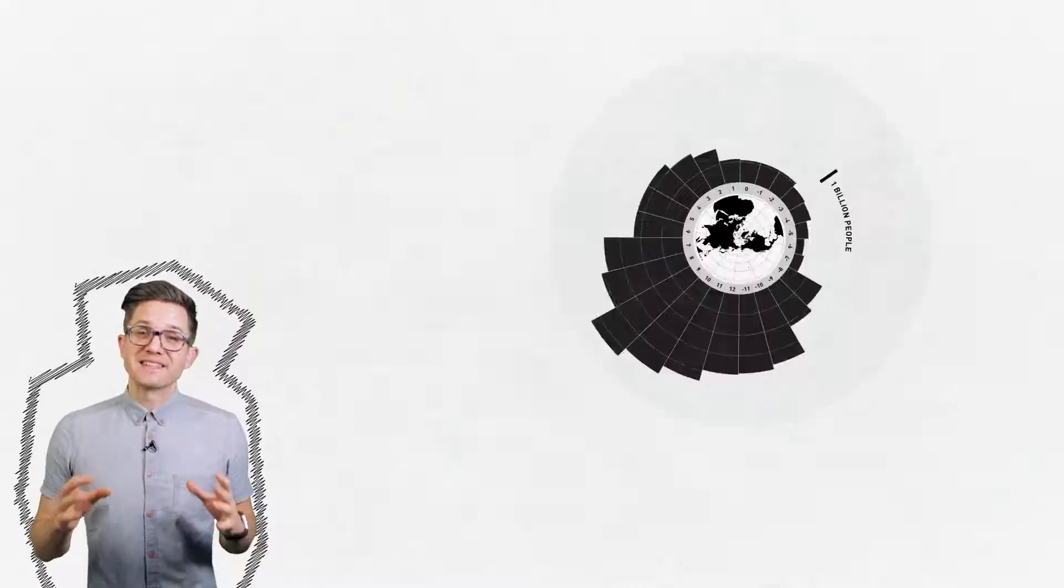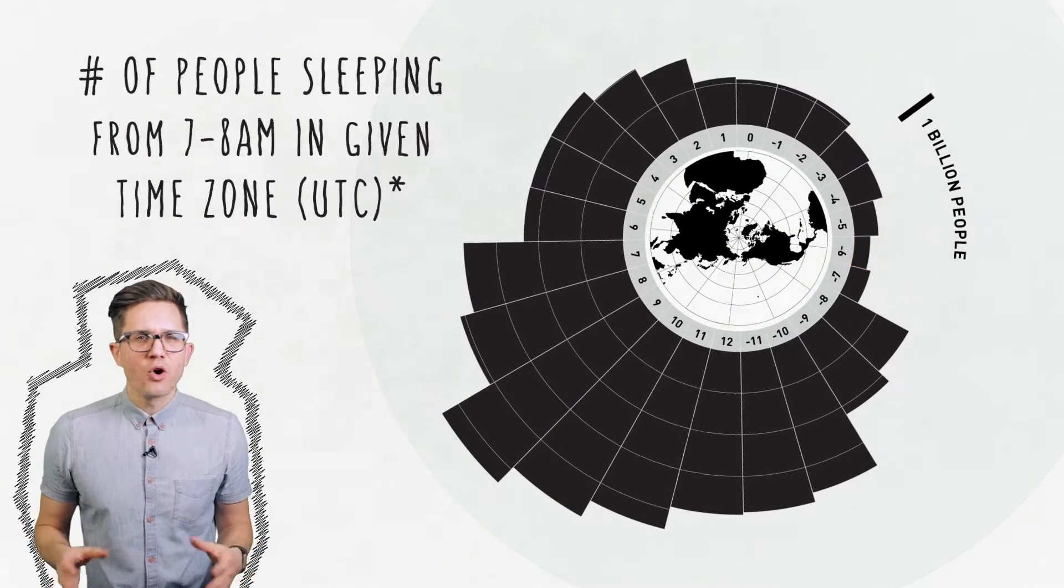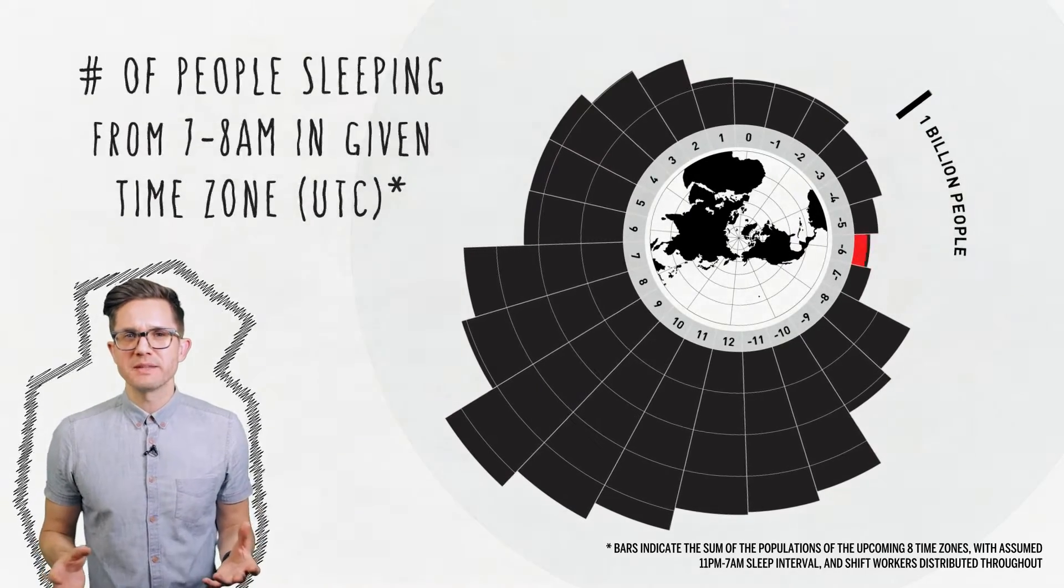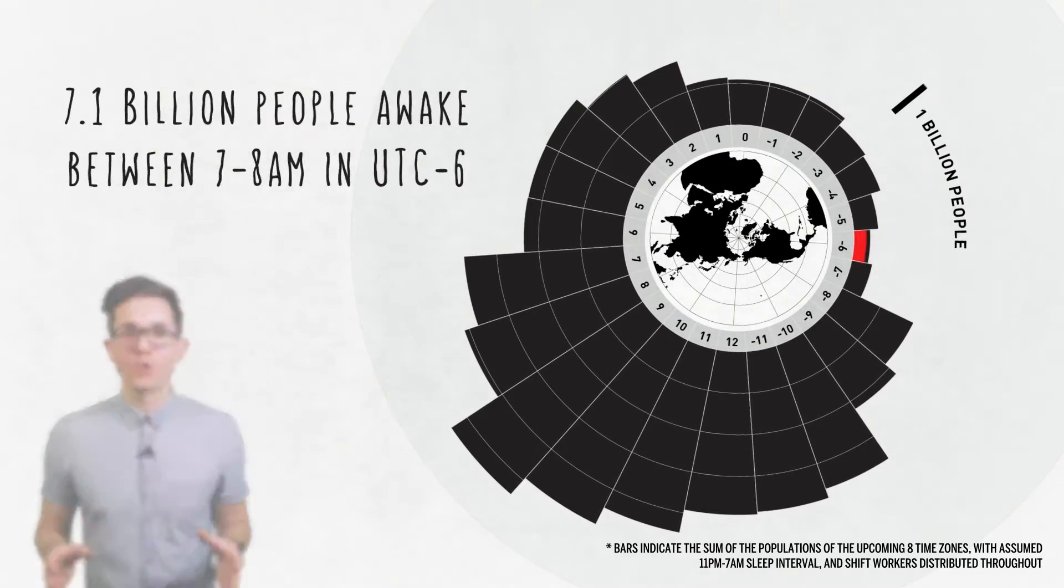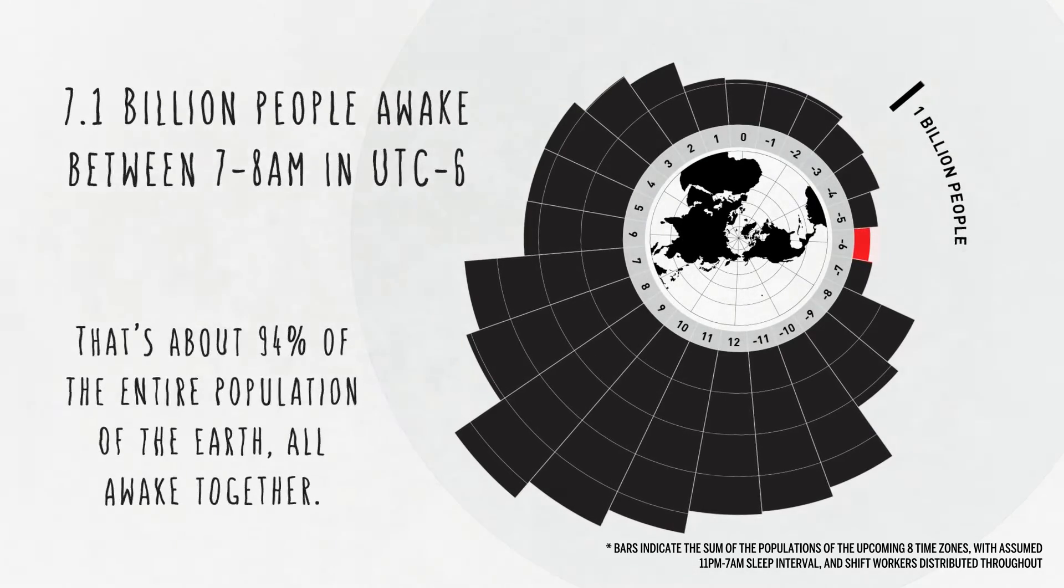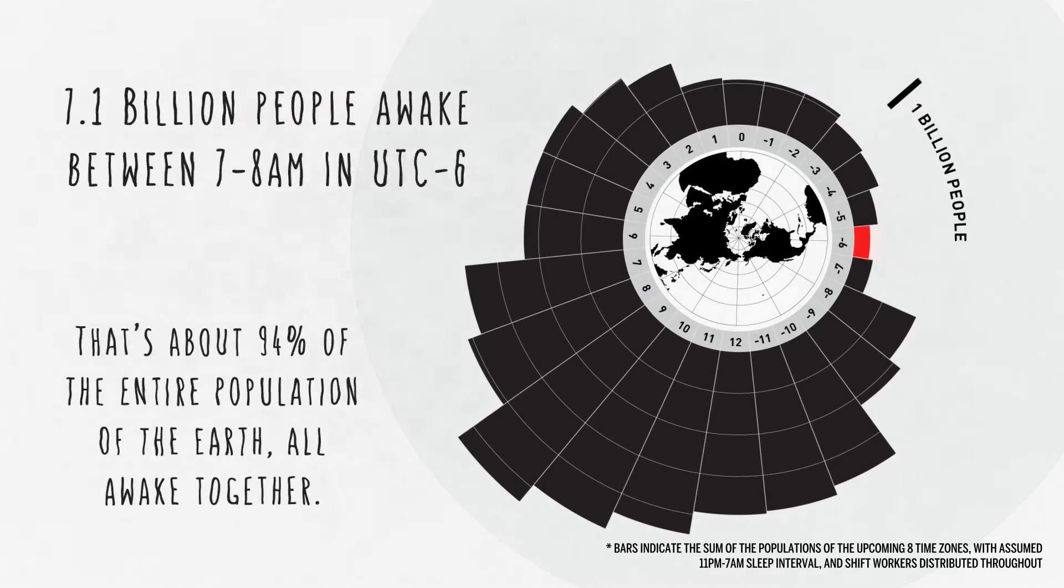The fewest people are asleep at 7am UTC minus 6. At this time, only about 400 million people are sleeping. Which means an incredible 7.1 billion people are awake. That's about 94% of the whole population of the earth.